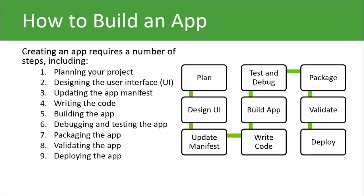A manifest file typically includes permissions for an app in order to access different hardware functions on a device or even access other applications. Next, we get started with actually writing our code — that's our HTML, our CSS, and our JavaScript. Then we move on to actually building the app: taking all that code and organizing it to create something functional and useful. We test and debug — we want to find any errors in our code before we publish. When I say publish, another word you'll hear is packaging: you package the application into an executable file so people can download it, run it, and start using it.